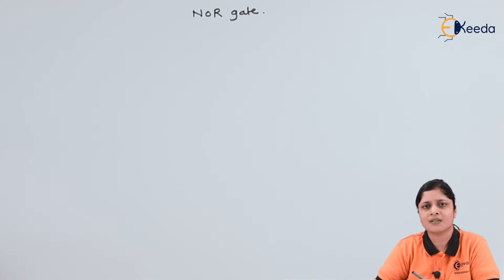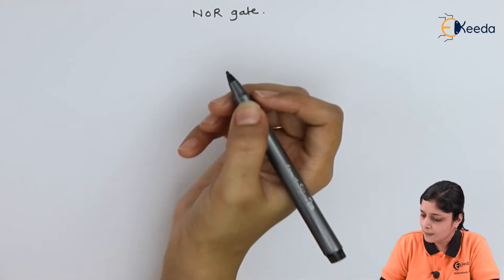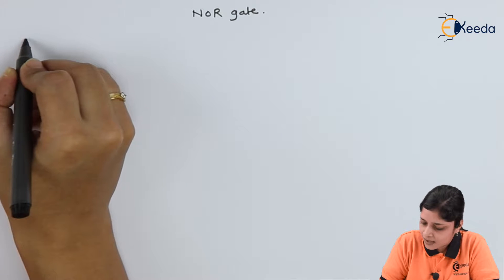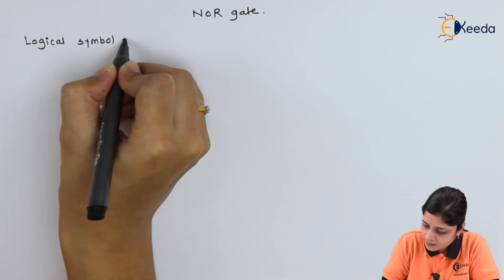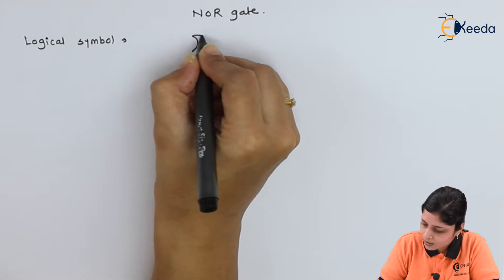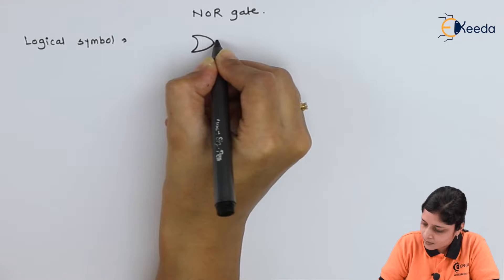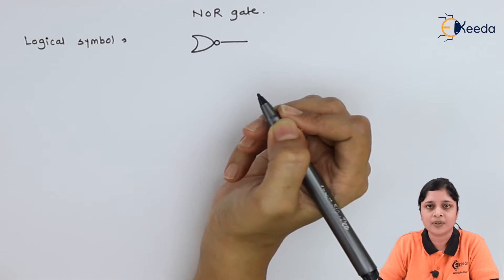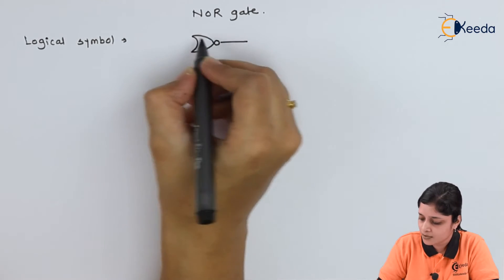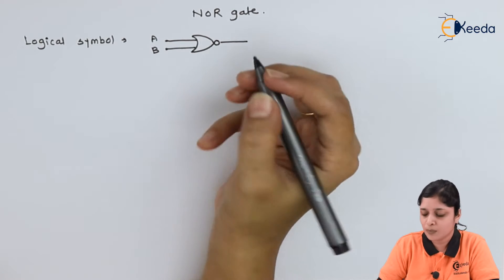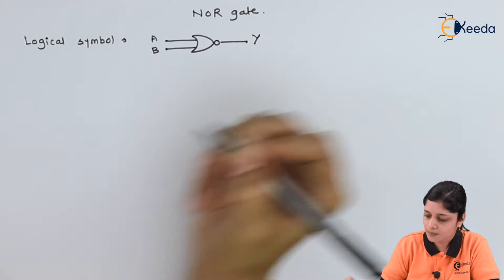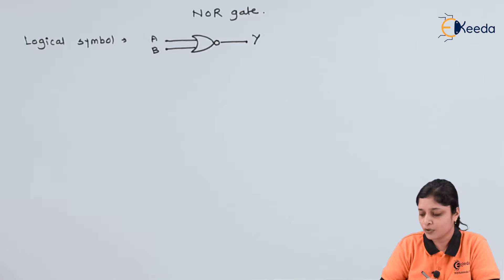So let's start with the logical symbol. Draw the OR gate and add here one bubble to get the inverted output, that is NOR gate. A and B are the inputs, Y is the output.